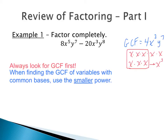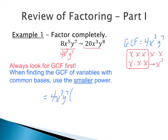We've found our greatest common factor of 4x to the third y to the seventh. When factoring using GCF, we keep that GCF on the outside and figure out what remains. We're dividing each term by the greatest common factor: 8x to the fifth y to the seventh divided by 4x to the third y to the seventh, and negative 20x to the third y to the eighth divided by 4x to the third y to the seventh.